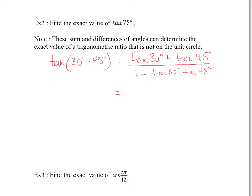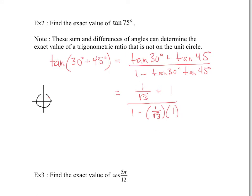Looking at the unit circle, 30 degrees has tan equal to y over x — y is 1/2, x is √3/2 — so tan 30 equals 1 over √3. Tan of 45 degrees is 1, because y and x have the same value. So I've replaced tan 30 with 1/√3 and tan 45 with 1, giving us: (1/√3 + 1) divided by (1 minus 1/√3 times 1).